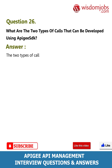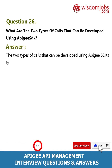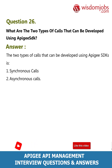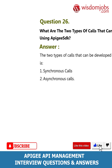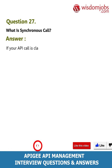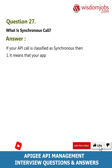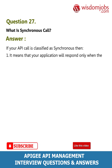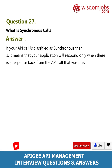Answer: The two types of calls that can be developed using Apigee SDKs are: one, synchronous calls; and two, asynchronous calls. Question 27: What is a synchronous call? Answer: If your API call is classified as synchronous, it means that your application will respond only when there is a response back from the API call that was previously made.